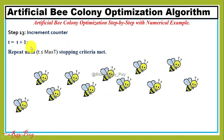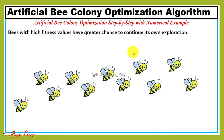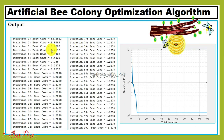For the scout bee phase: bees with higher fitness values have a greater chance to continue their own exploration, so bees can explore their own food sources. The output after 100 iterations shows a fitness value of 1.2278.